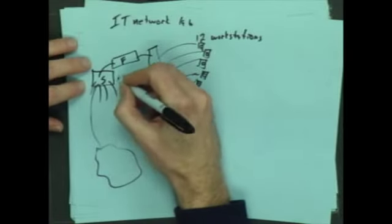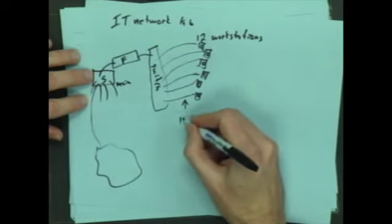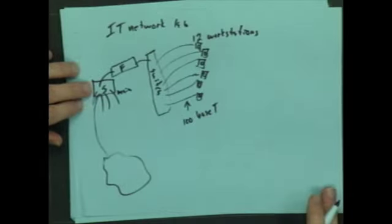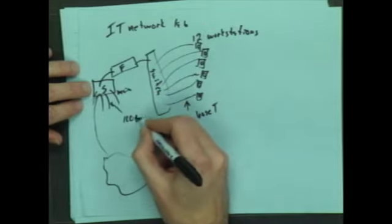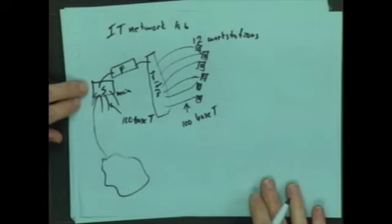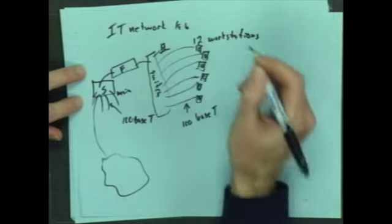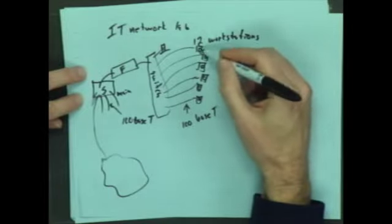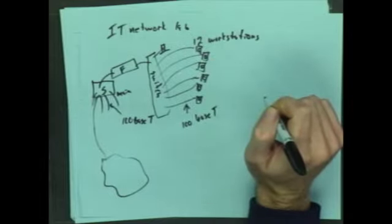So this is the building, right? These ran at 100 base T, 100 megabits per second. This one ran at 100 base T. Now that was great. I also had a little server over here that I got to run my own sort of stuff on. So for example, if I wanted these people to work on some project, I could put it on my server, and then they could all get to it. So that was fun.